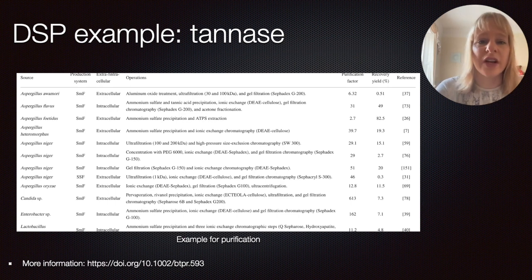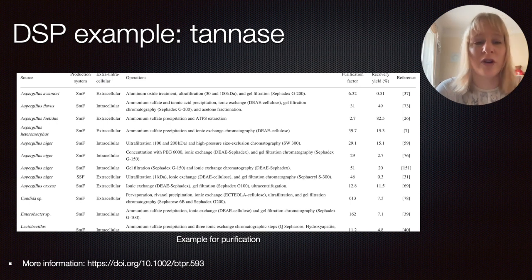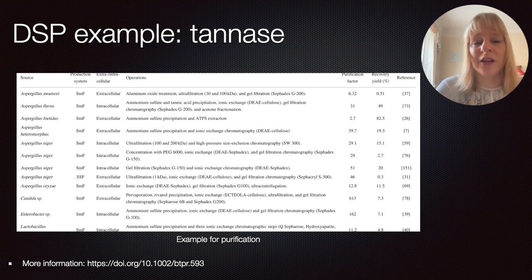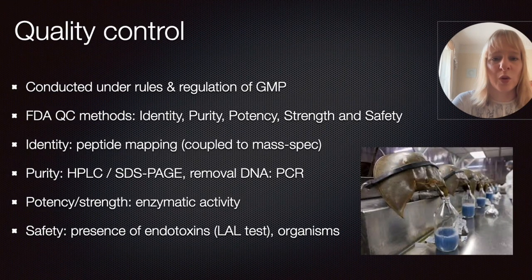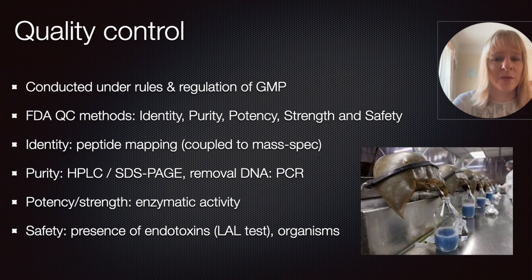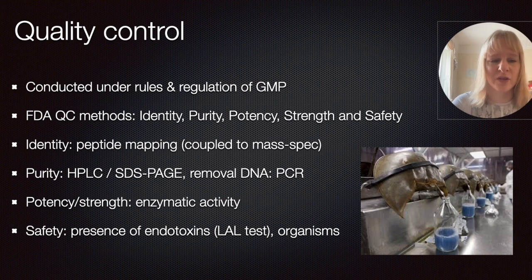A key consideration is the balance between purification — how pure you actually need to get your product — versus the recovery and costs that come with it, which determines what type of process you follow. A key factor is quality control. So after completing your DSP, how do you actually confirm that you have the pure material? This is conducted under the regulations of Good Manufacturing Practice, or GMP.